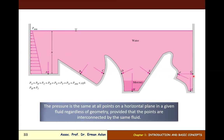If you think about it — is P_H similar to P_I or not? It's not similar, because the density of mercury is higher than the density of water. Therefore, P_H is not equal to P_I; we can say P_H is greater than P_I.